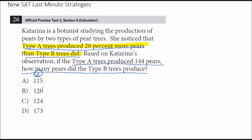What we do know is that type B trees produce one of these four answer values. So let's take 20% of each of these and add it to the type B value, because type B plus 20% of type B equals type A.